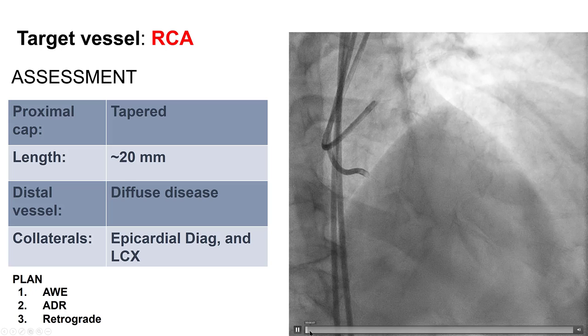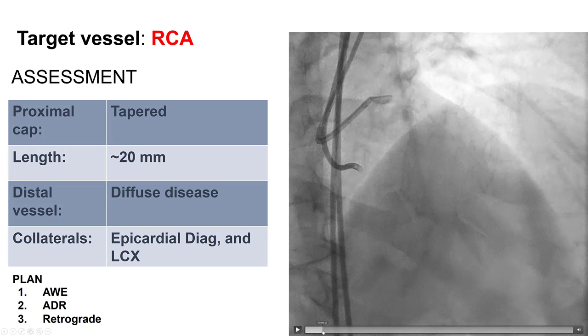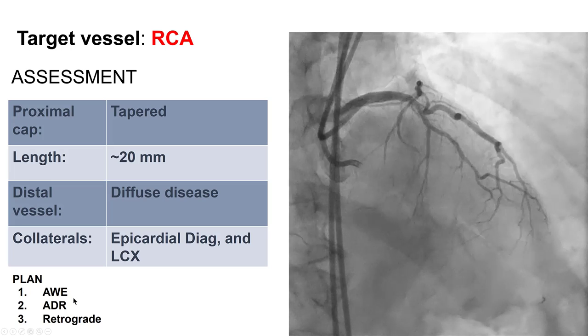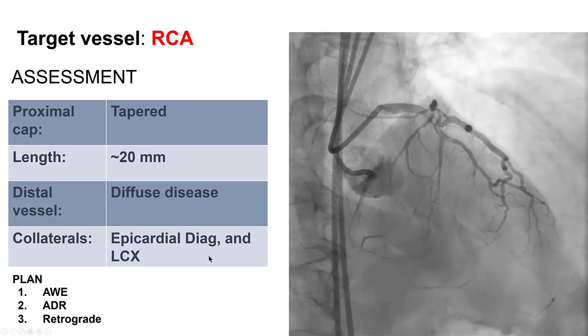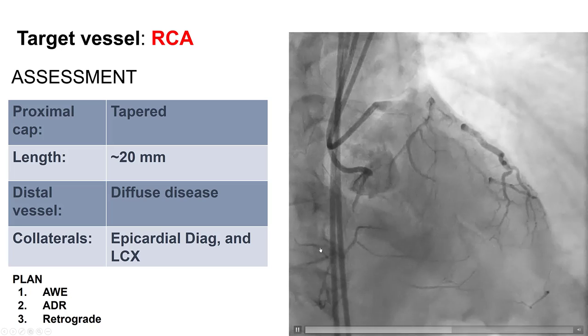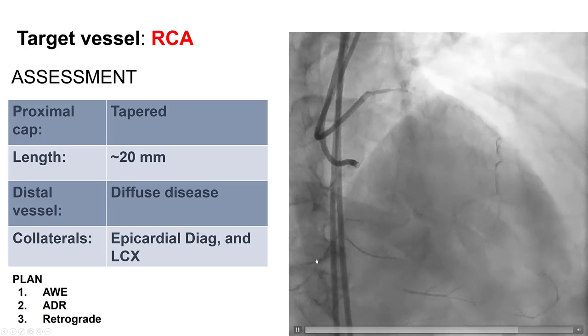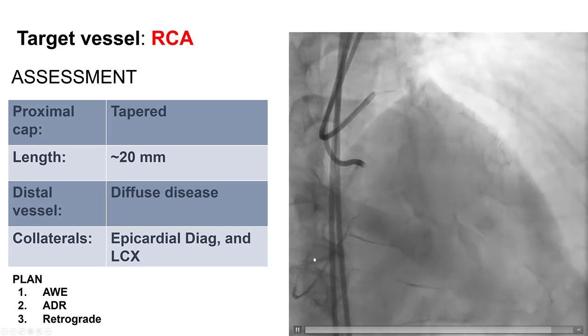Based on these findings, our plan was to start with antegrade wiring and then proceed with antegrade dissection and reentry, leaving retrograde as the third approach.